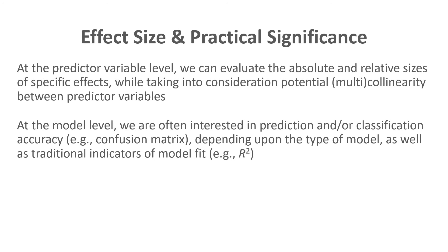For linear regression, R-squared — the proportion of variance explained in an outcome — is a traditional model fit indicator, but it need not be R-squared. Any indicator of model fit, classification accuracy, or prediction accuracy can be used as a model-level characteristic to assess how well the model predicted what we were trying to predict.